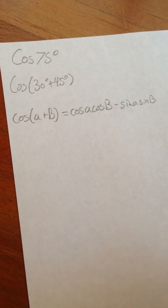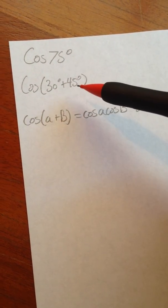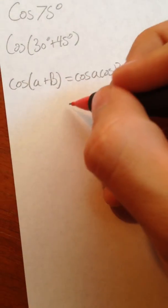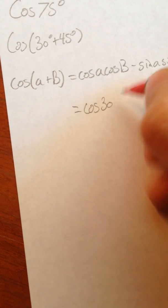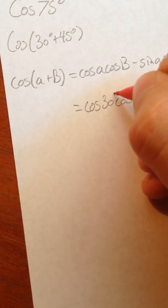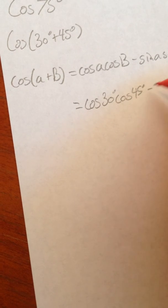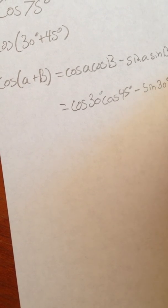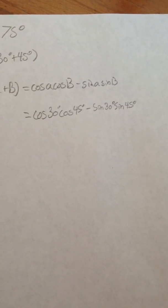Now we're going to begin plugging in the values for alpha and beta — 30 being alpha and 45 degrees being beta. So that equals the cosine of 30 degrees times the cosine of 45 degrees, minus the sine of 30 degrees times the sine of 45 degrees. That is what our equation is going to look like.